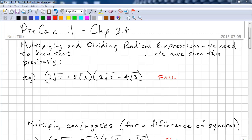This is Pre-Calc 11, Chapter 2.4. This time we're going to be multiplying and dividing radical expressions. And we need to know that the mth root of a times the mth root of b equals the mth root of a times b. And we've seen this previously.